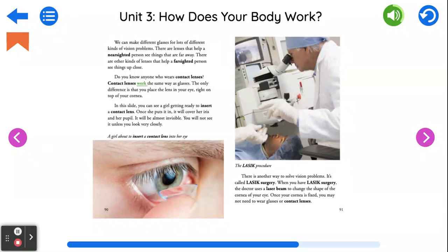Contact lenses work the same way as glasses. The only difference is that you place the lens in your eye right on top of your cornea. In this slide, you can see a girl getting ready to insert a contact lens. Once she puts it in, it will cover her iris and her pupil. It will be almost invisible. You will not see it unless you look very closely.